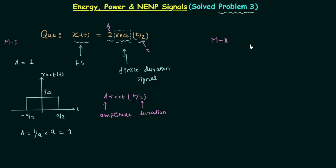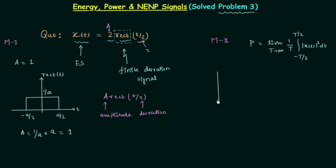Now we move to Method 2. We will calculate the average power P. Since the signal is non-periodic, we use the formula: P = limit as T→∞ of (1/T) · integral from -T/2 to T/2 of |x(t)|² dt. To follow Method 2 we need the waveform of x(t). The duration for which the signal amplitude is non-zero is 2, meaning from -1 to 1 the signal value is non-zero with amplitude 2.